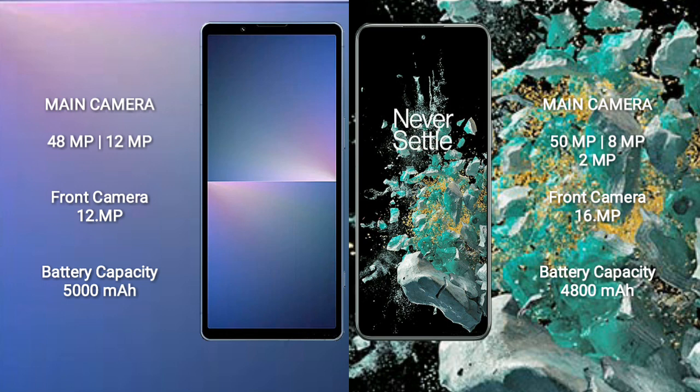Sony Xperia 5 Mark 5 features a dual rear camera setup: 48MP plus 12MP, and a 12MP front camera. OnePlus 10T features a triple rear camera setup: 50MP plus 8MP plus 2MP, and a 16MP front camera. Sony Xperia 5 Mark 5 has a 5000mAh battery with 25W fast charging support, while OnePlus 10T has a 4800mAh battery with 150W fast charging support.